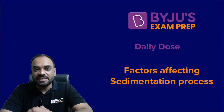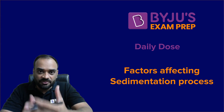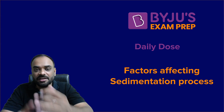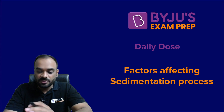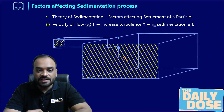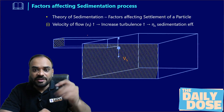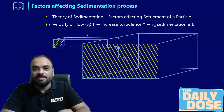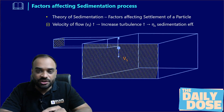We need to resolve this problem in our water treatment plant so that we can settle down the sediments, which are basically suspended solids, and ultimately our water gets treated. So let's understand the various factors by which we can affect the sedimentation process and how we can resolve it. The first factor is basically the velocity of flow.